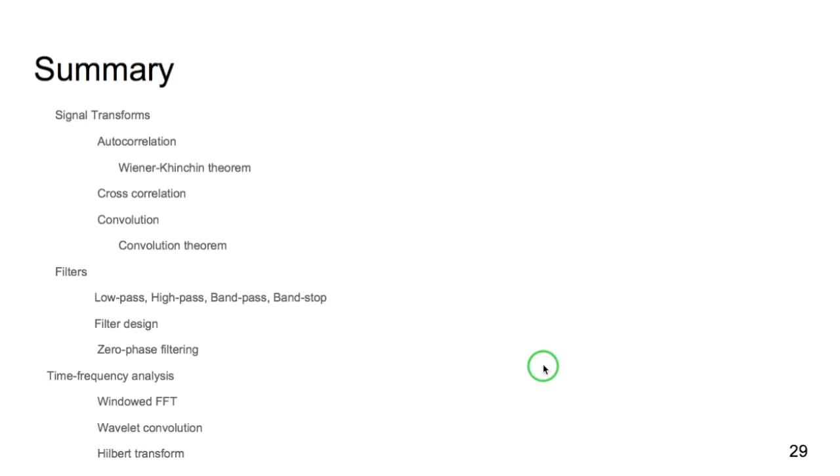So I talked about signal transforms: the autocorrelation, cross-correlation, and convolution. And in particular, I spent time talking about a special case of convolution, which is filtering. I then moved on to time frequency analysis, and we went over the three principal methods used for time frequency analysis in neuroscience: the short time FFT, wavelet convolution, and the Hilbert transform.